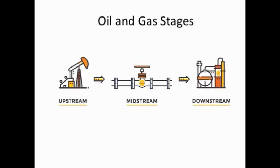The three major oil and gas stages are upstream, midstream, and downstream. Upstream is all the work related to the production of oil, like exploration and bringing the oil from the well. Once we have it, we move it to another facility that will treat the oil — that moving process is midstream. Downstream is the facility, which can be a petrochemical plant or a refinery.